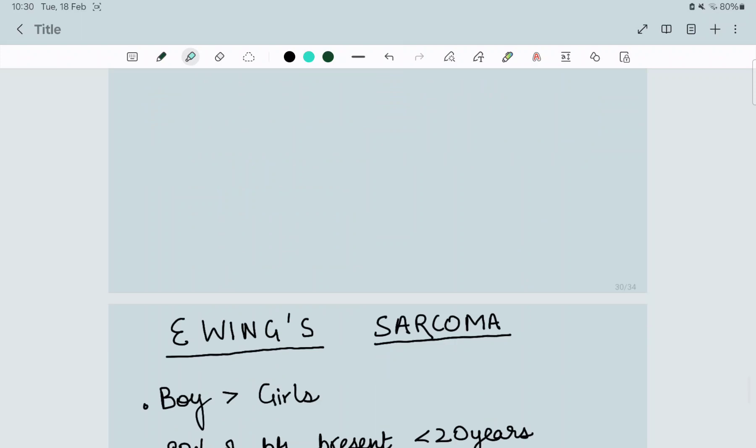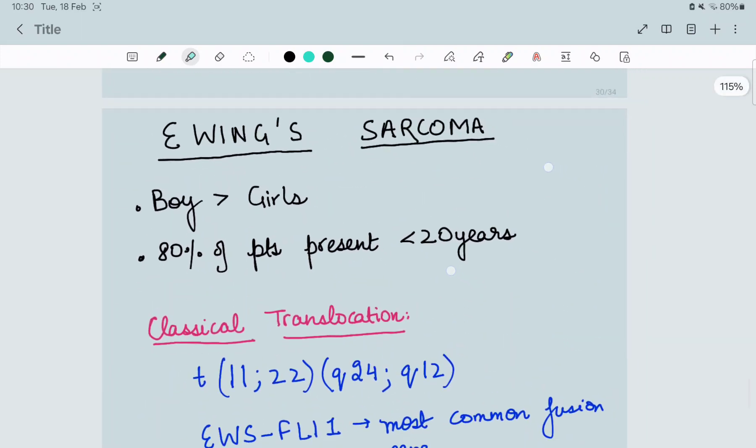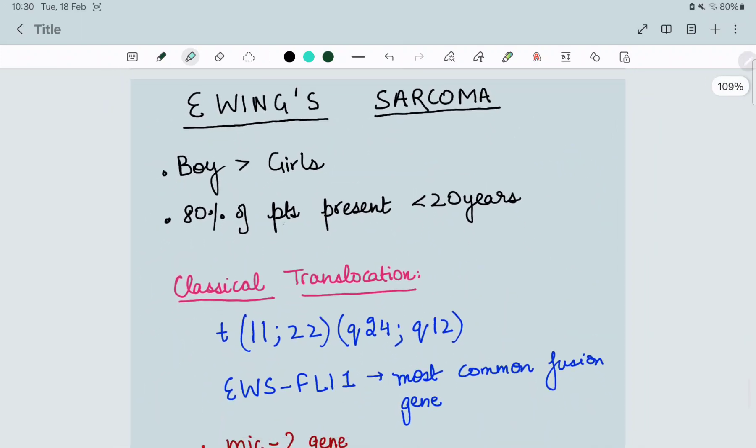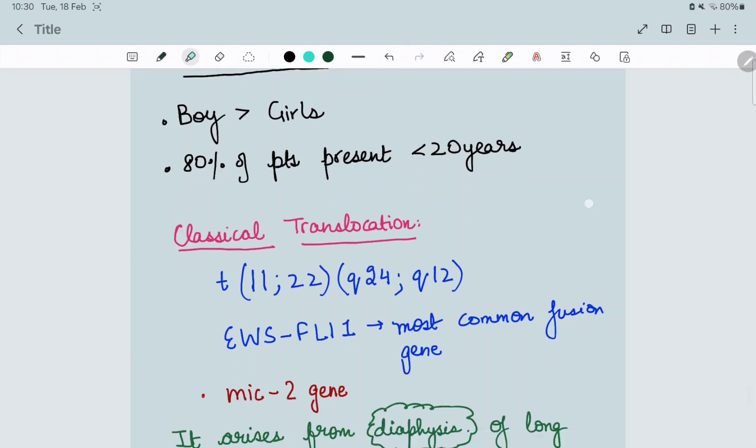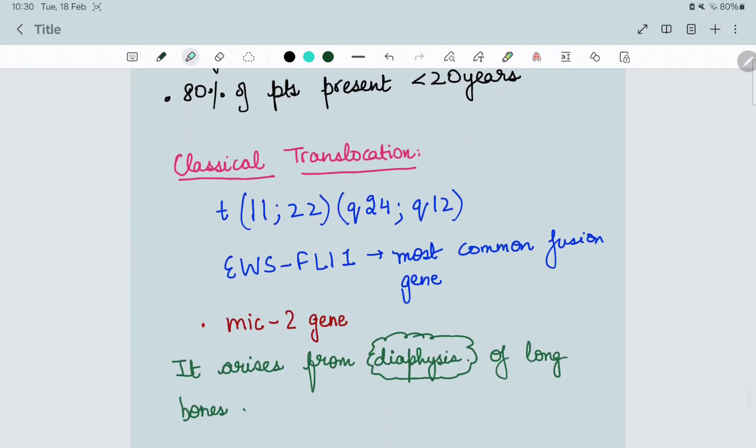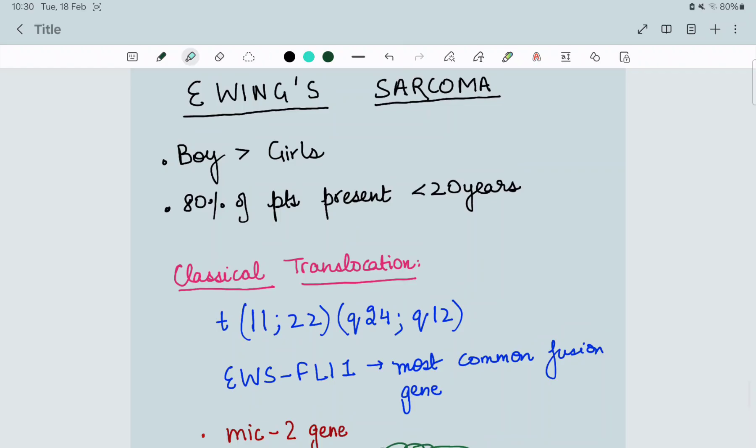Ewing sarcoma most commonly affects boys more than girls, and 80% of patients present below 20 years of age. What are the common translocations? It is 11;22. From Ewing's E, you can make it like 11, 22: q24, q12. The double - you just do double.